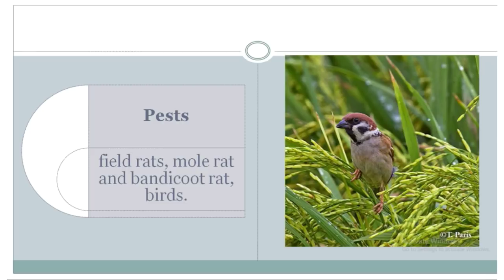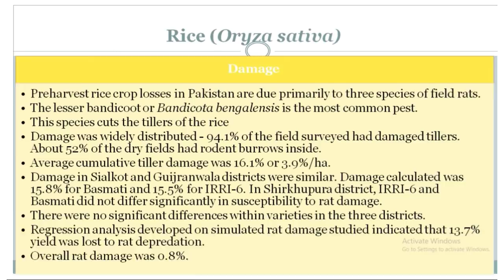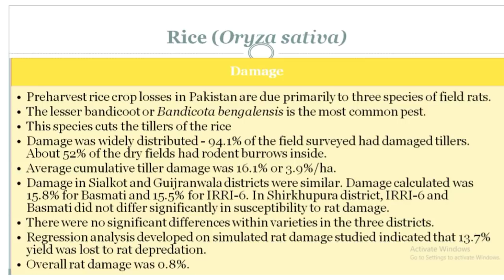Rice damage: pre-harvest rice crop losses in Pakistan are due primarily to three species of field rats. The lesser bandicoot, Bandicota bengalensis, is the most common pest. This species cuts the tillers of the rice. Damage was widely distributed — 94.1% of fields surveyed had damaged tillers. About 52% of dry fields had rodent burrows inside. Average cumulative tiller damage was 6.1%, or 3.9% per hectare.